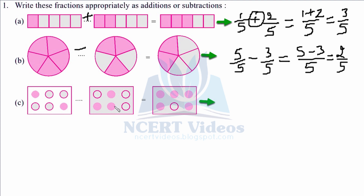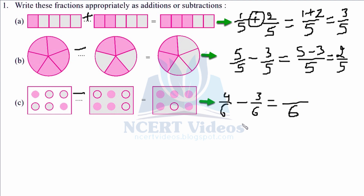In the third part we have four shaded portions in the first figure and three in the second, so four minus three gives you one shaded portion in the last. Initially we had four out of six parts, and when three parts are taken out of six — taking LCM and applying common sense — since the denominator is the same, you just subtract the numerators: four minus three equals one over six. That is the answer for part c.